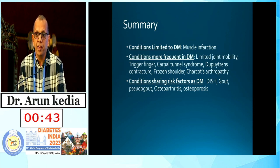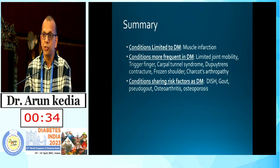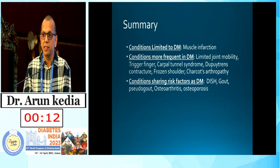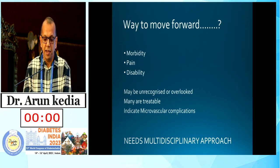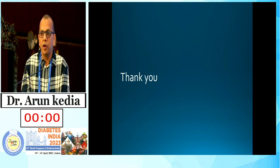To summarize the musculoskeletal manifestations: some conditions are unique to diabetes — muscle infarction being the prime example. Others are more frequent in diabetes — limited joint mobility, trigger finger, carpal tunnel syndrome, Dupuytren's contracture, frozen shoulder, and Charcot's arthropathy. And some share risk factors with diabetes and can coexist — DISH, gout, pseudogout, osteoarthritis, and osteoporosis. We must keep all of these in mind when seeing patients with musculoskeletal complaints in our diabetes clinic. The way forward is to reduce morbidity, pain, and disability, recognize these conditions without overlooking them, and adopt a multidisciplinary approach in alliance with physiotherapists and orthopedicians. Thank you.